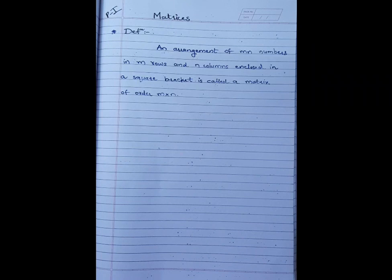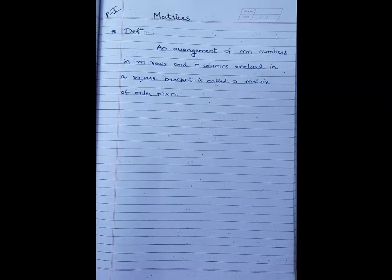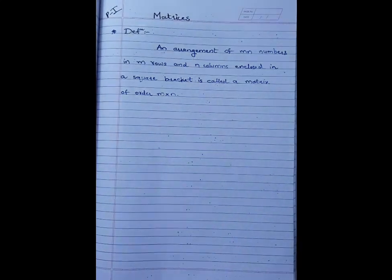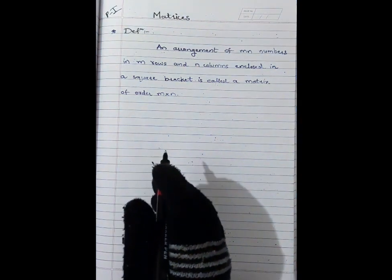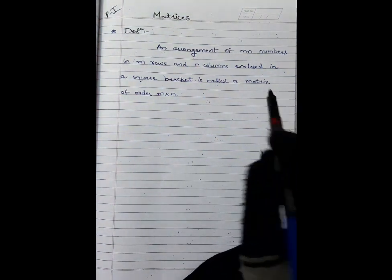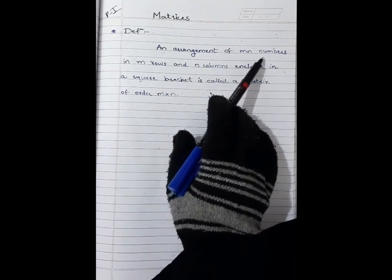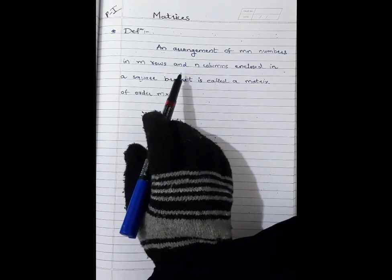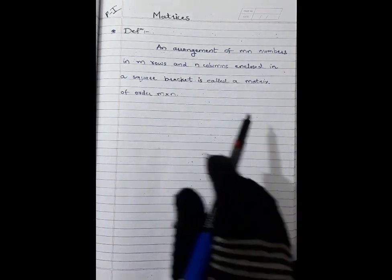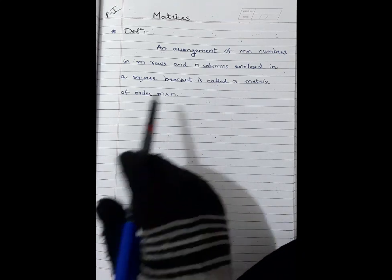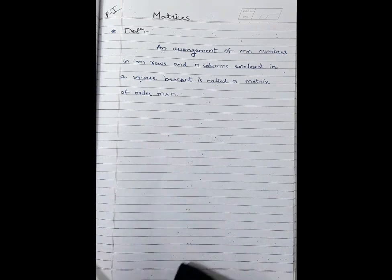Hello students, today we will start from Paper 1 textbook chapter number 2, Matrices. We have already studied chapter Matrices in standard 11th. Now first we will revise the definition of matrices. A matrix is an arrangement of m×n numbers in m rows and n columns, enclosed in square brackets, and is called a matrix of order m×n.